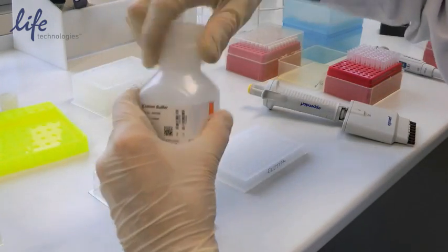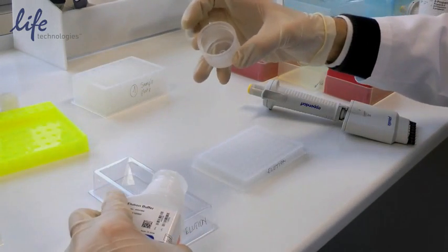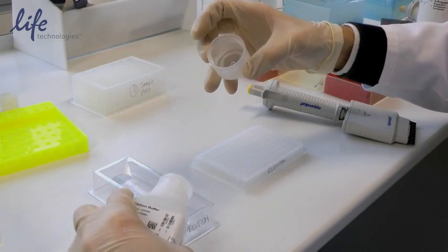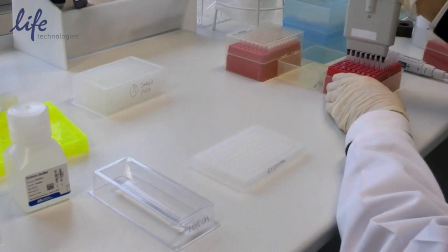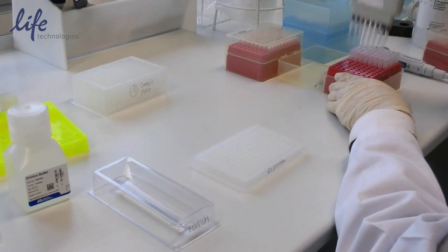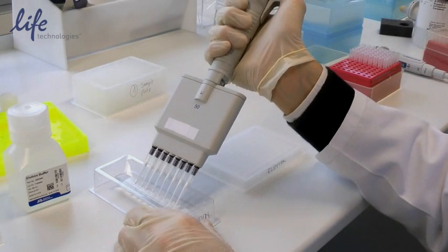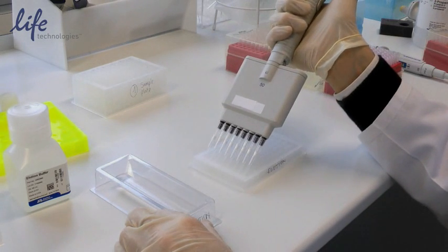Now we're going to pipette the elution buffer. The elution buffer is the other required element. So we place it in here and we can work again with a multi-channel pipette. We can use just one set of tips which is again important for high throughput.